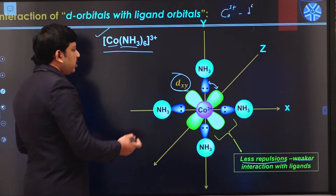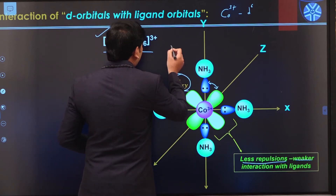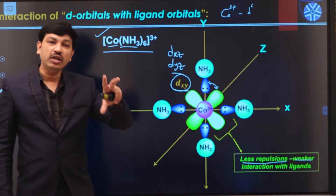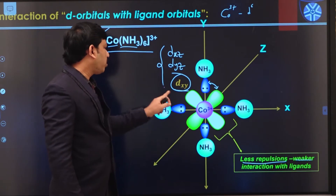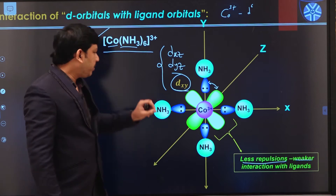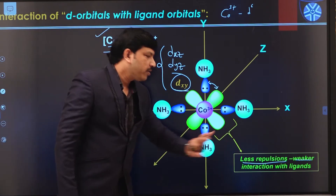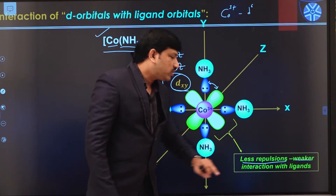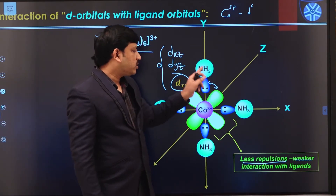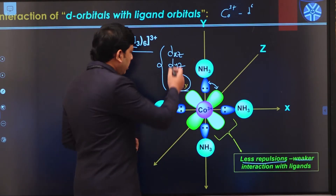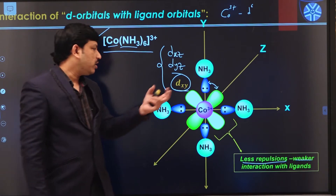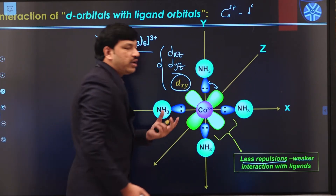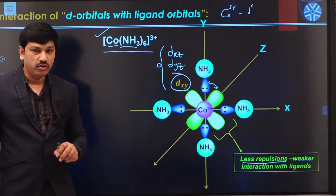Just like dxy, the dxz and dyz orbitals also have their lobes in between the axes. So this particular set of orbitals has their lobes in between the axis. In all these cases the approaching ligands have less repulsion from these d orbitals — these d orbitals experience less repulsion from the approaching ligands. Whenever dxy, dyz, or dxz orbitals interact with the ligand orbitals, there is a weaker interaction with the ligand orbitals.